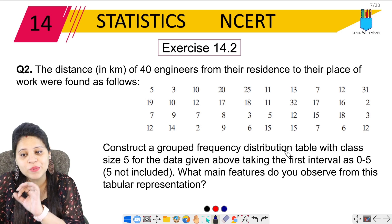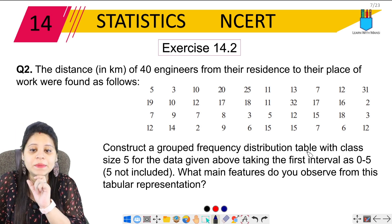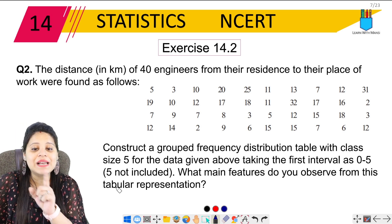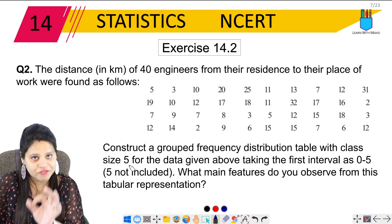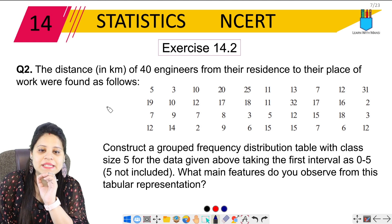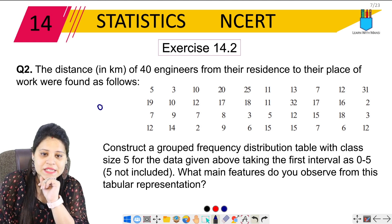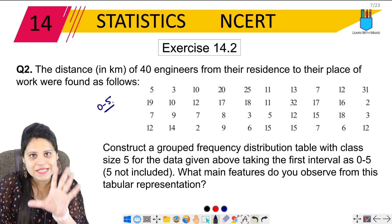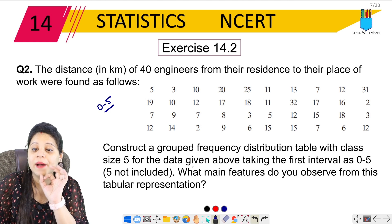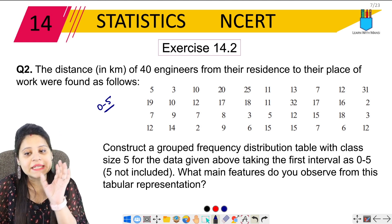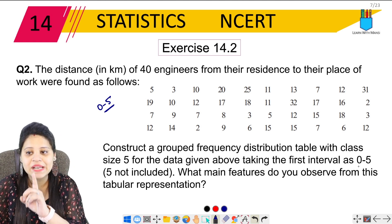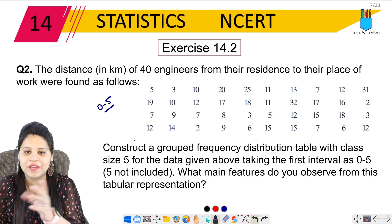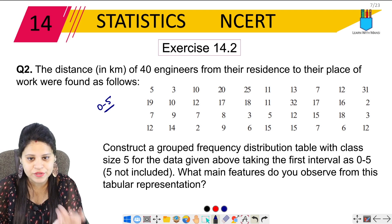Construct the grouped frequency distribution table with class size 5. If we are doing 0 to 5, the size of this interval is 5. The data given above takes the first interval as 0 to 5, with 5 not included.